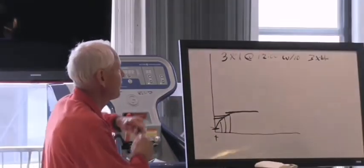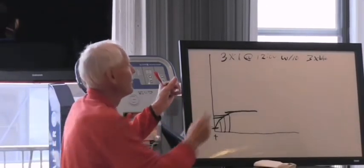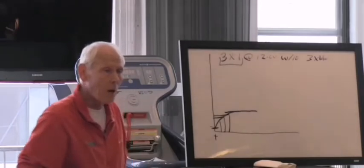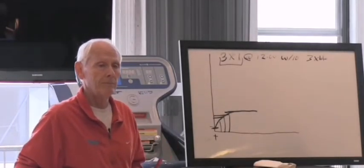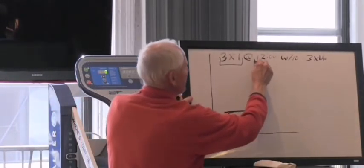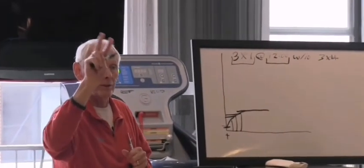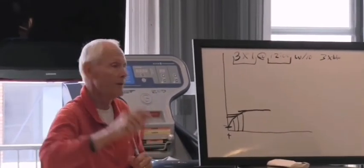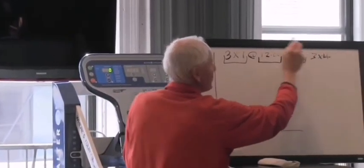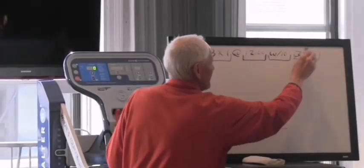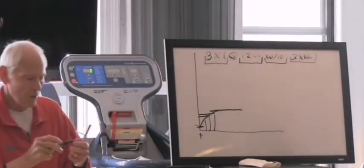But the neat thing is, you've got four things to deal with. This is an amount of work right here, three miles. How much work am I doing? This is the intensity at which you do it, 12 minutes a mile. There's two characteristics right there. How much am I doing? How fast am I doing it? The third is, how much rest do I take between bouts of work? And the fourth is, what's the frequency? So you've got four things you can deal with.